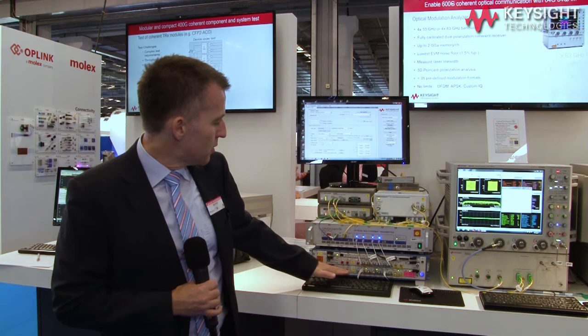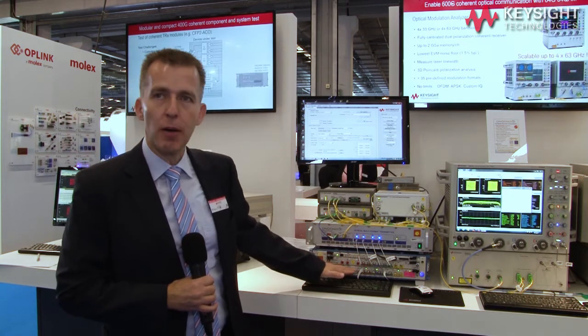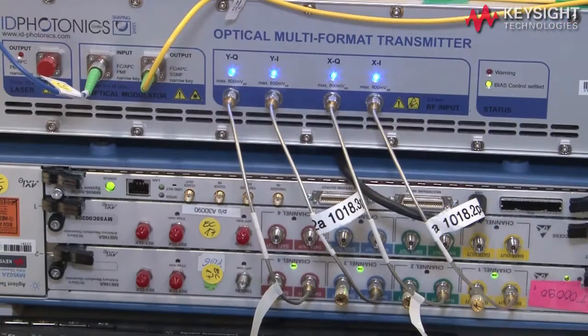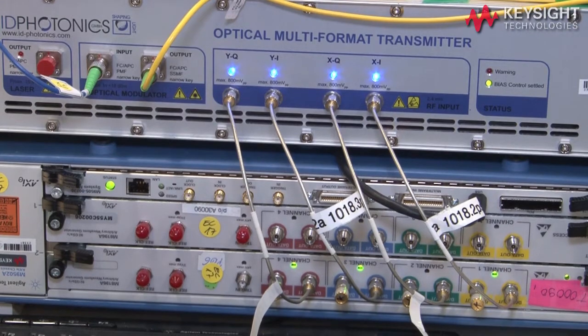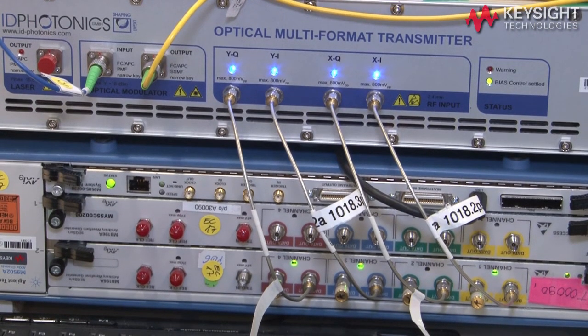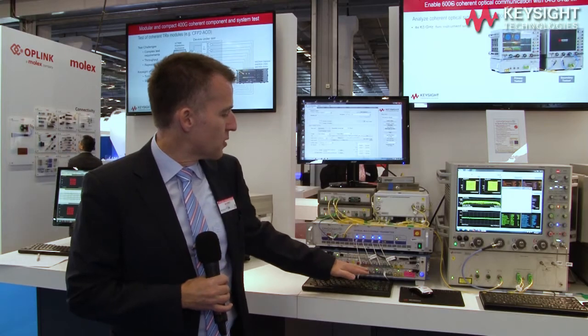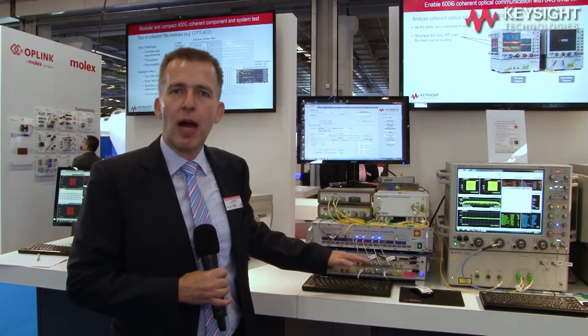On the electrical side to drive this modulator we have our arbitrary waveform generator, the M8196A. It's a 92 gigasample arbitrary waveform generator capable of generating signals in bandwidth of up to 32 gigahertz in each channel.